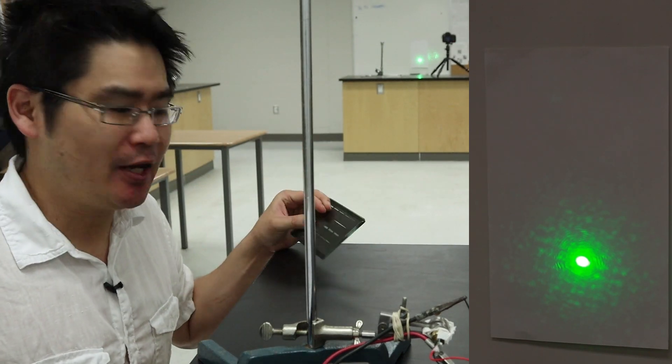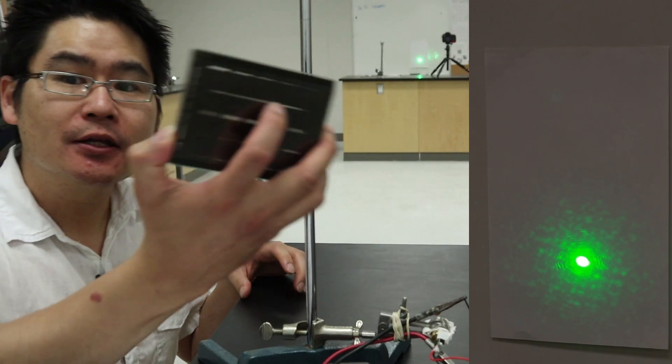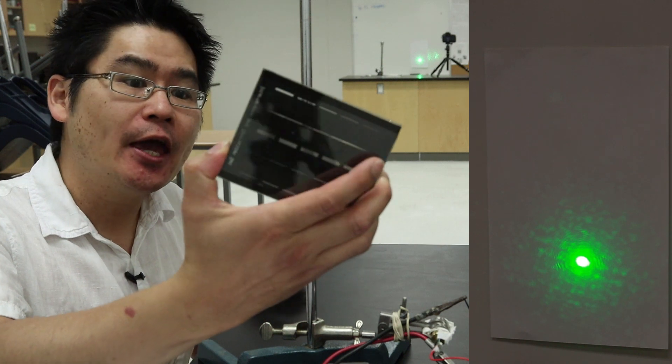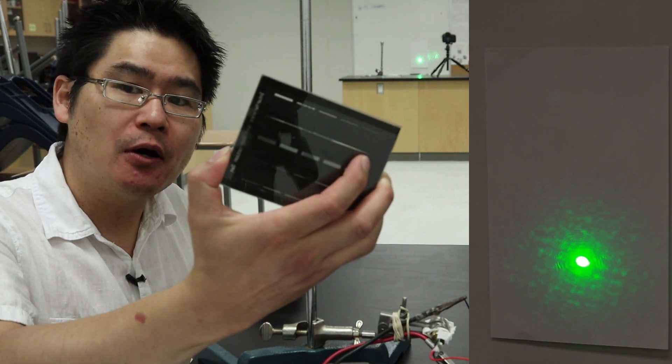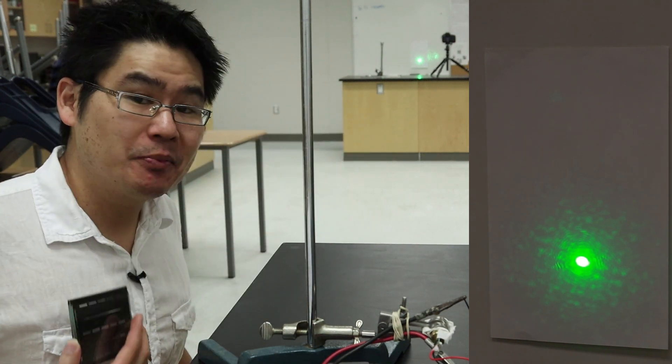What I have over here is an aperture grating. On one end of the aperture grating, the size of the opening is rather large and on the far end, it gets smaller and smaller. Let's see what happens with laser light when I place this in front.